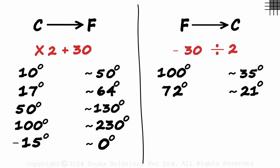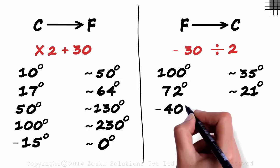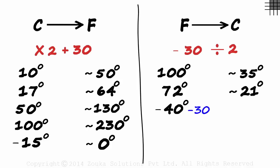Now let's try converting minus 40 degrees Fahrenheit to Celsius. Subtracting 30, we get minus 70. And dividing it by 2, we get minus 35 degrees Celsius approximately.